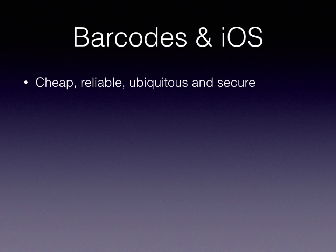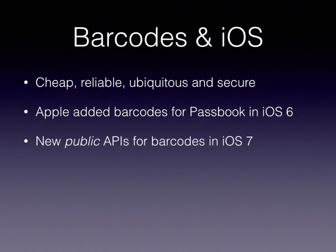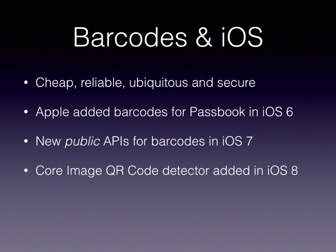Apple needed to add barcode technology in iOS 6 because they were introducing Passbook, and as you know Passbook displays 2D barcodes for tickets. As of iOS 7 they even added several public APIs, and that's where my interest was piqued. I was looking through the release notes roughly a year ago wondering: why does Apple add public APIs for barcodes? Isn't that an outdated technology nobody needs anymore? In iOS 8 not much happened — they just added a CI detector to Core Image — but the barcode technology added in iOS 7 still stands.